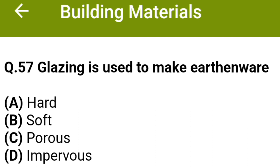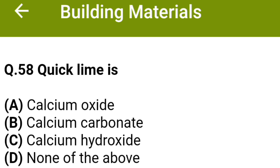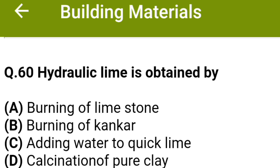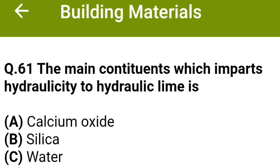Glazing is used to make earthenware: option A hard, option B soft, option C porous, option D impervious. The correct answer is option D: impervious. Quick lime is: option A calcium oxide, option B calcium carbonate, option C calcium hydroxide, option D none of the above. The correct answer is option A: calcium oxide. Quick lime is: option A slow in setting, option B rapid in slaking, option C good in strength, option D all of these. The correct answer is option A and B: slow in setting and rapid in slaking. Hydraulic lime is obtained by: option A burning of limestone, option B burning of kankar, option C adding water to quick lime, option D calcination of pure clay. The correct answer is option B: burning of kankar.